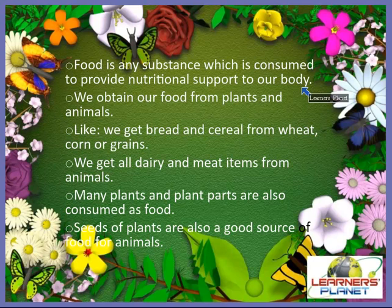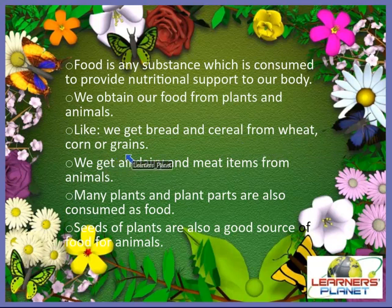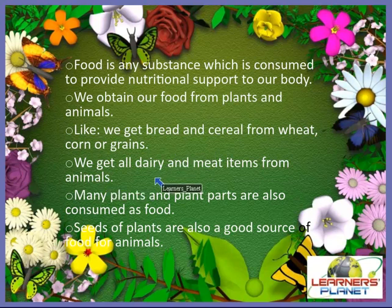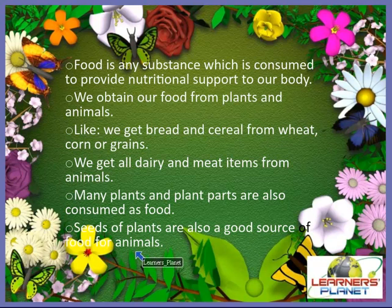We get our food from plants and animals. We get bread and cereals from wheat, corn, or grains. We also get all the dairy and meat items from animals. You will also be amazed to know that many plants and plant parts are consumed directly as food, and even the seeds of plants are a very good source of food for animals.